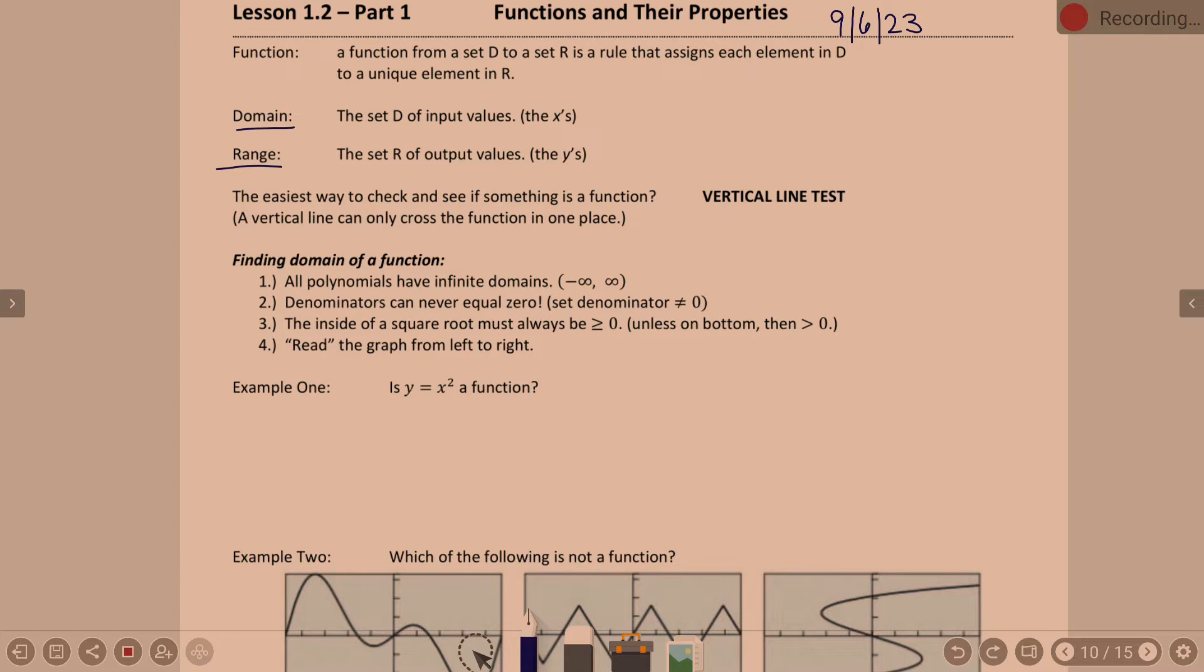So if we go back to probably middle school days, when you guys first learned to decide if something is a function or not, every element in the domain has one corresponding element in the range. And so that's what it's talking about there. It assigns each element in D to a unique element in R. You may have learned it as domain values cannot repeat. That may sound familiar.